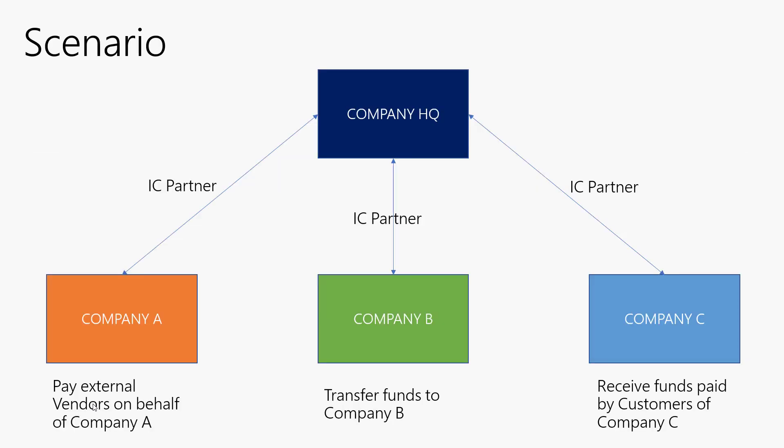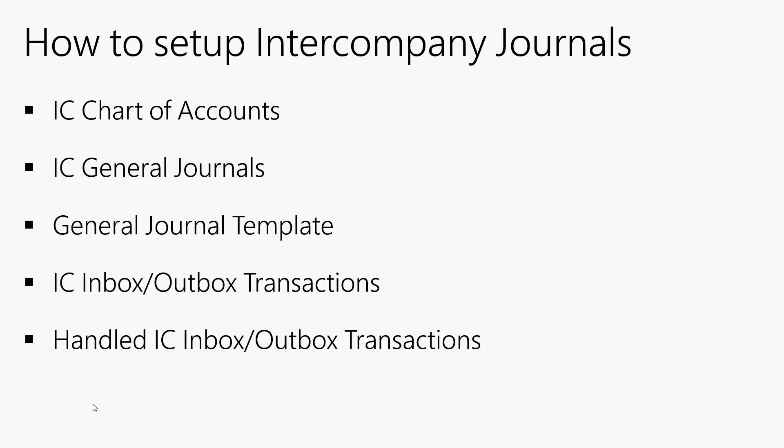The following scenarios will be covered. The first scenario is where company HQ pays external vendors on behalf of company A. The second scenario is where company HQ transfers funds to company B. And the third scenario is where customers for company C pay to a bank owned by company HQ. There are some setups required before we begin the intercompany journals.